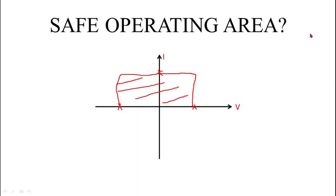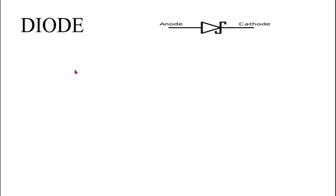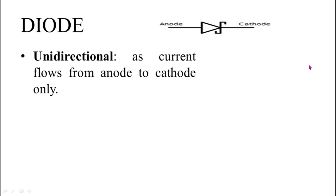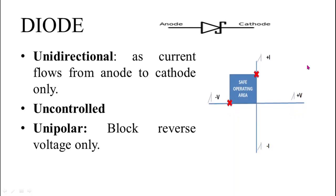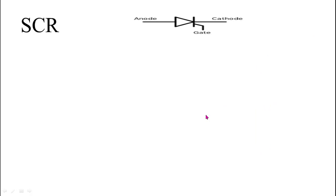Now let's start with diode. Diode is a unidirectional device as it allows current to flow in the positive direction only, from anode to cathode. It is an uncontrolled switch because the on and off states cannot be controlled — they are controlled by the external voltage polarity. It is unipolar as it blocks the reverse voltage only. To get the safe operating area, we put a cross mark on the positive current axis and a cross mark on the negative voltage axis, and joining these two crosses gives the safe operating area of diode.